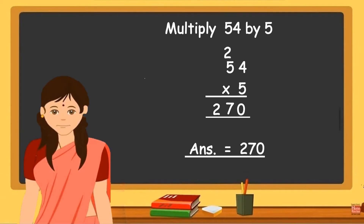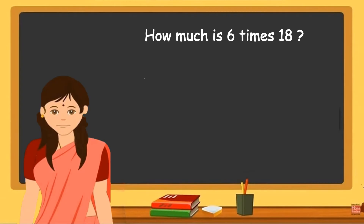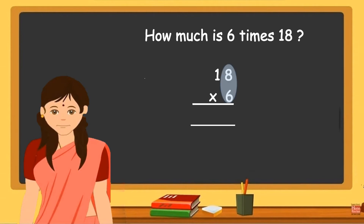Another question: how much is 6 times 18? Now you know that in multiplication the multiplicand and multiplier can be interchanged. So when you arrange the numbers for short multiplication, always write the greater number as the multiplicand and the smaller number as the multiplier. In this sum we will write 18 as the multiplicand and 6 as the multiplier. Begin by multiplying 6 into 8, which is equal to 48. Carry over 4 and write it above 1.